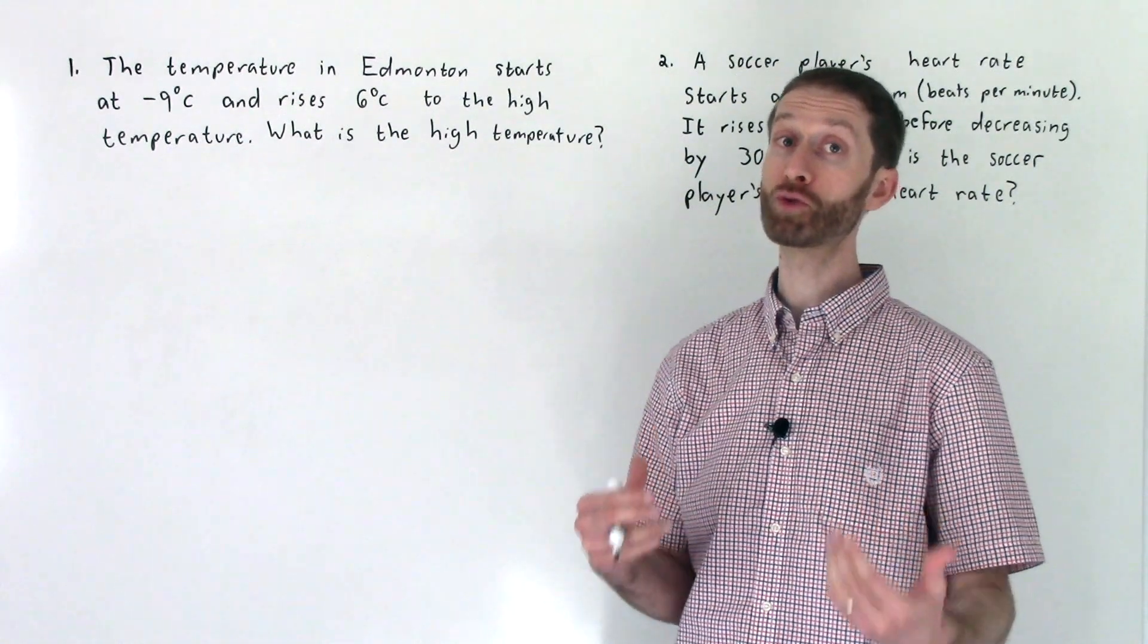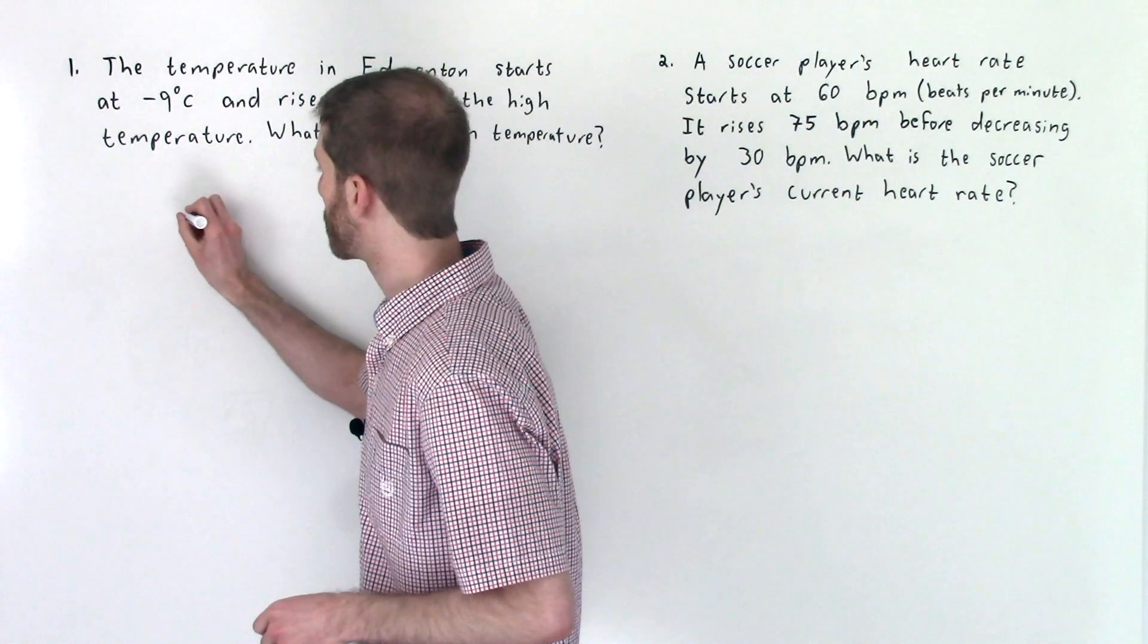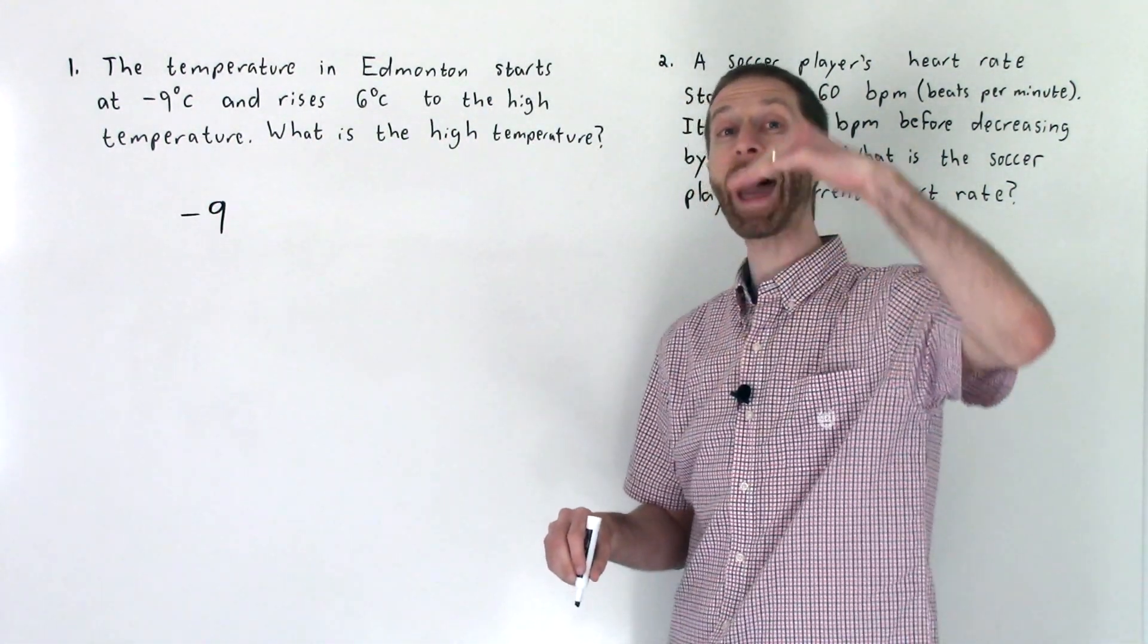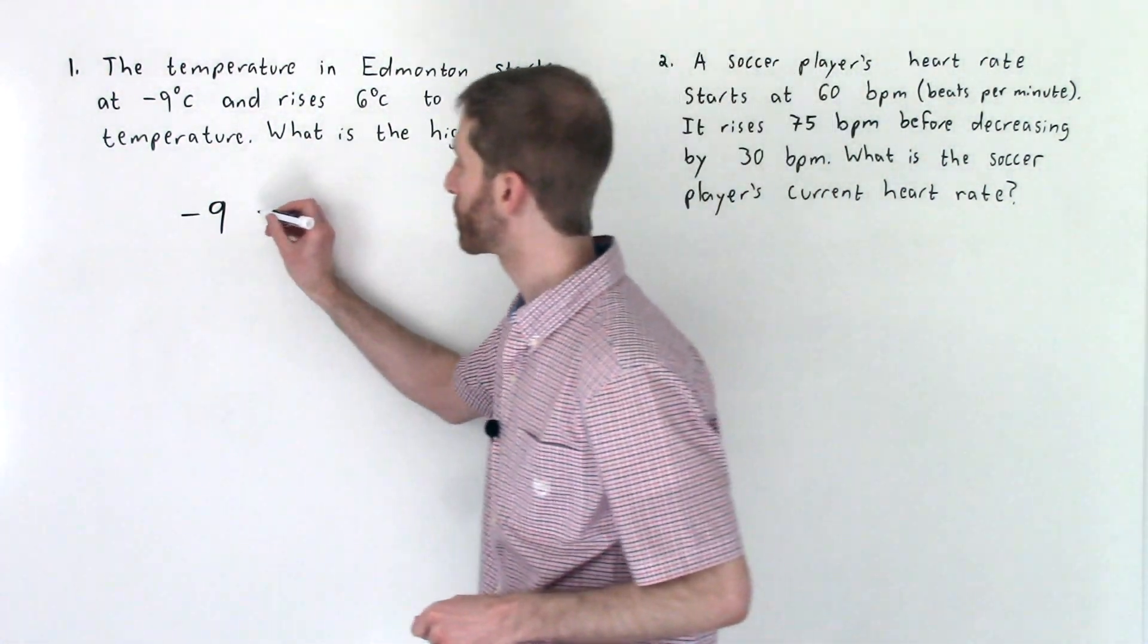This is all about translating the situation. We start at negative nine. That's the amount that we start at. We begin at negative nine. If we rise, we are adding six degrees Celsius onto that current temperature. We add six.